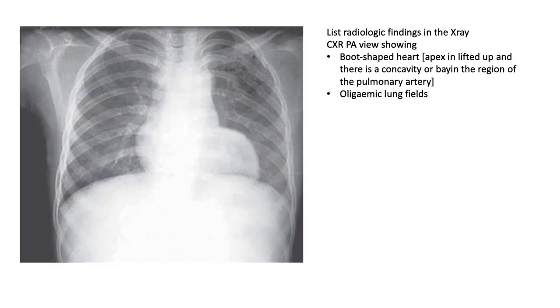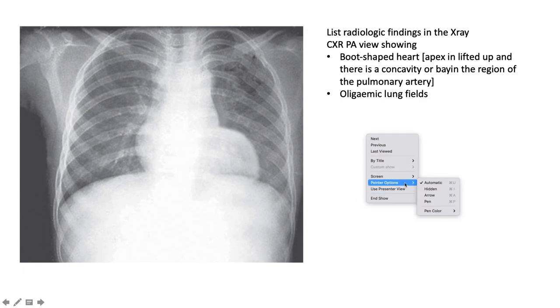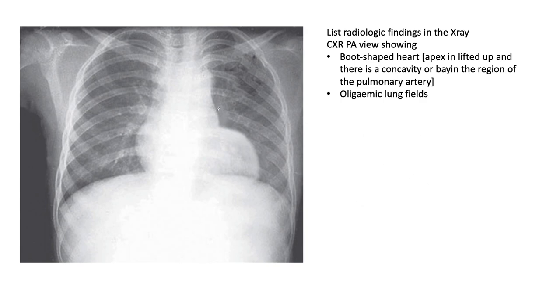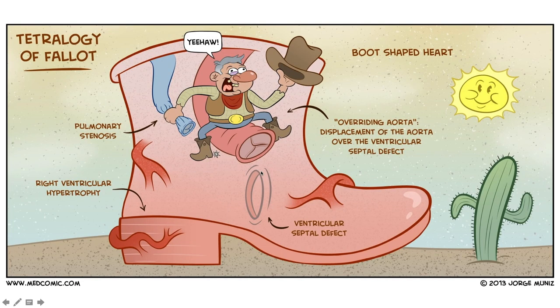This is a boot-shaped heart — a boot-shaped configuration speaking to right ventricular enlargement with oligaemic lung fields. Putting it all together, this could indicate tetralogy of Fallot. The four characteristic features are pulmonary stenosis, right ventricular hypertrophy, ventricular septal defect, and an overriding aorta.